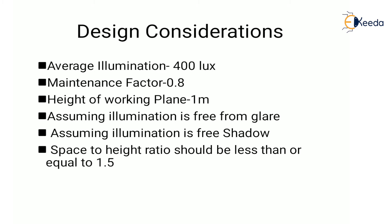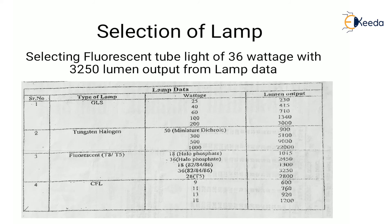First is design considerations. We need to assume: average illumination for a classroom is 400 lux (recommended level for this workspace), maintenance factor is 0.8, height of working plane is 1 meter, illumination is assumed free from glare and shadow, and space-to-height ratio should be less than or equal to 1.5. For the lamp selection, we select a fluorescent tube light of 36 watts with a lumen output of 3250.